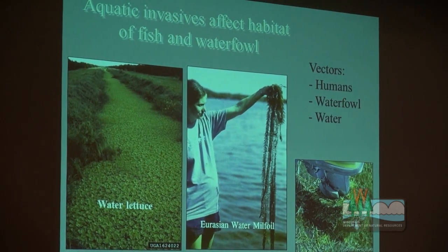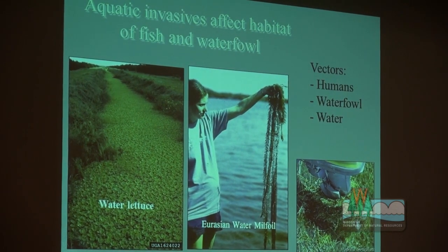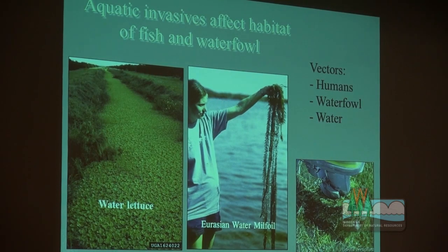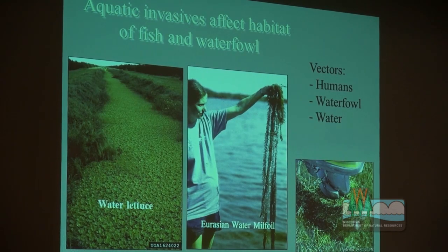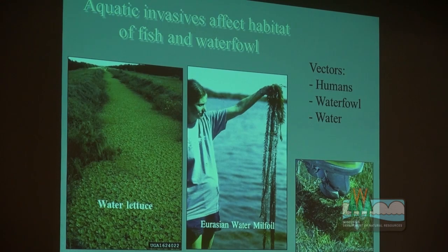Aquatic invasives can also cause significant problems, especially for waterfowl. Water lettuce is a species we're probably going to list as prohibited in Wisconsin. Both water lettuce and water hyacinth were found overwintering for a couple of years on Pool 5 of the Mississippi — we didn't think it would overwinter here, but it did. When it gets into an area, it forms very dense patches that eliminate open water and shallow water habitat, causing serious problems for waterfowl.